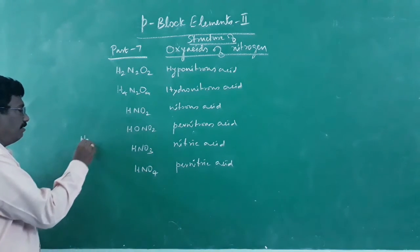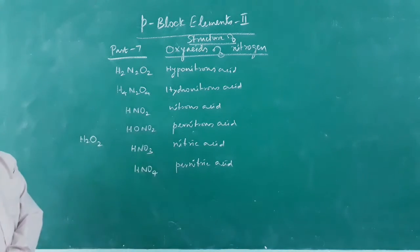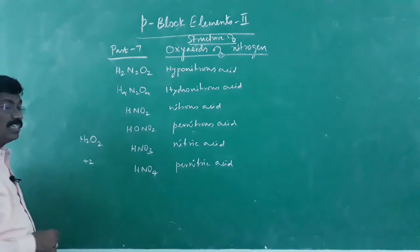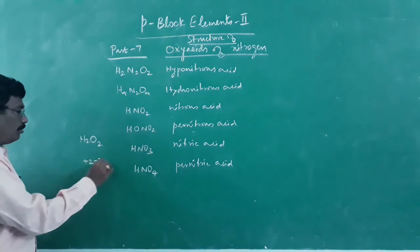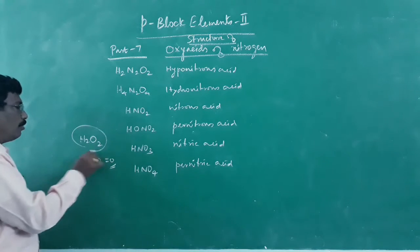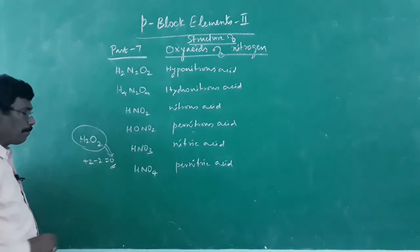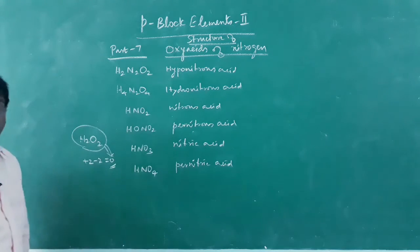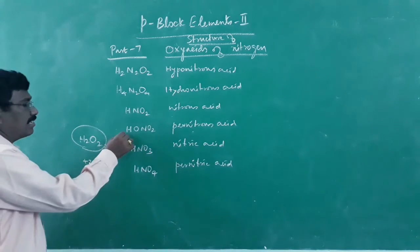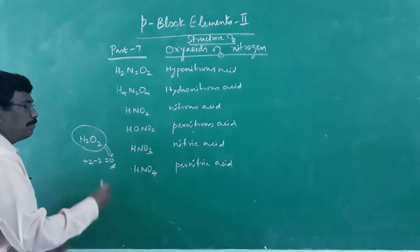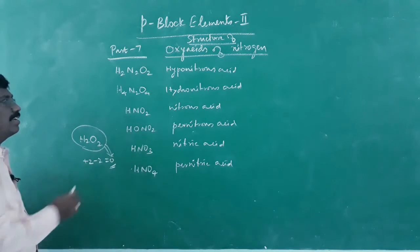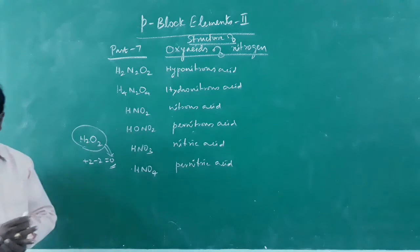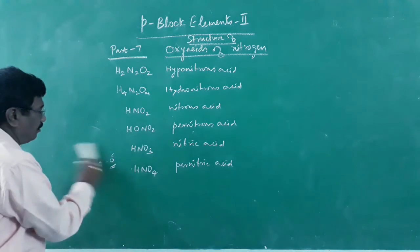In hydrogen peroxide, what is the oxidation state of oxygen? Hydrogen is always +1, so two hydrogens give +2. Oxygen is usually −2, but in peroxide it is −1, giving 2×(−1) = −2, which balances to zero. This is what happens in pernitrous acid and pernitric acid, where oxygen is in the peroxide linkage.